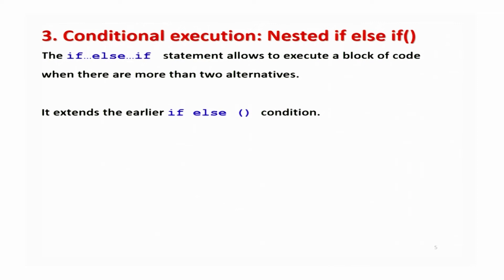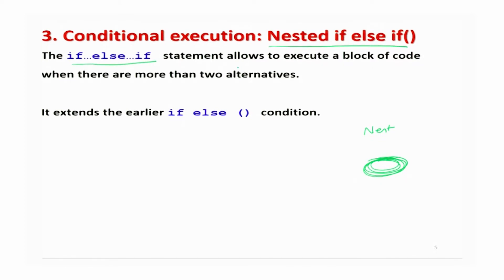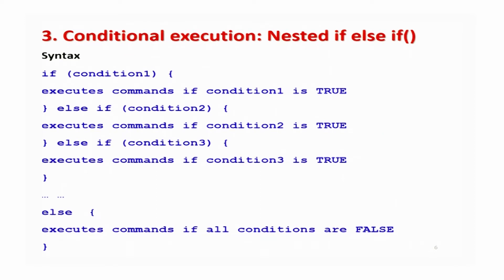Now I will work on an extension of if-else called nested if-else. Just as a bird makes a nest by placing sticks over each other, in nested if-else we use if-else-if repeatedly. This statement allows us to execute a block of code when there are more than two alternatives. Suppose you have condition 1, condition 2, condition 3, and so on — based on whether each condition is true or false, you execute certain commands.